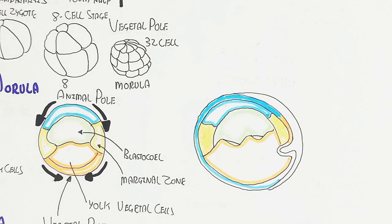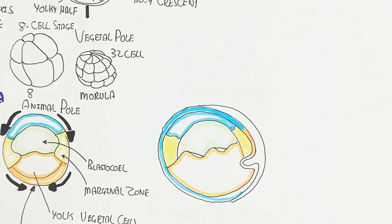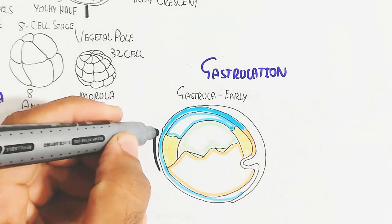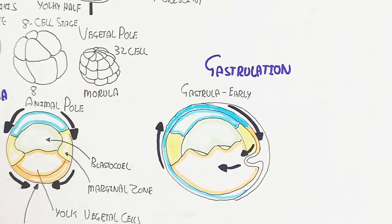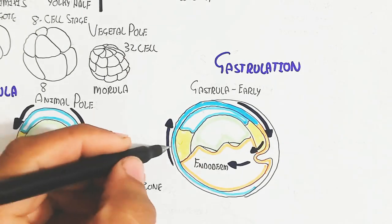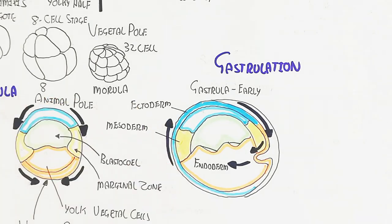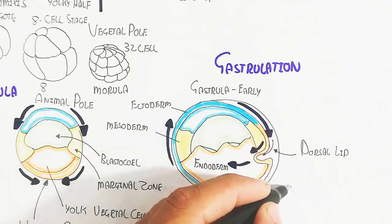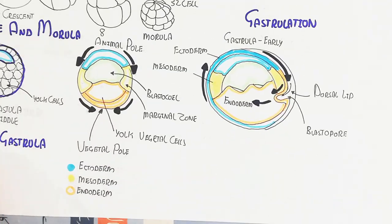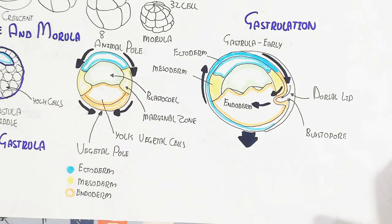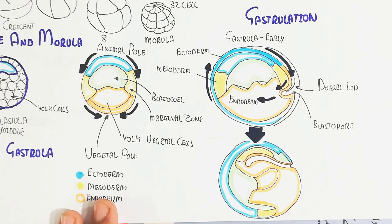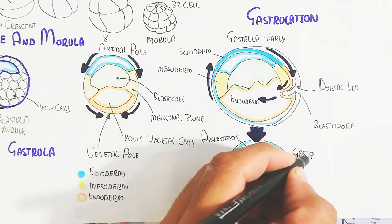The early stage of gastrulation occurs. In the late stage, the dorsal lip and blastopore will be formed. The blastopore means the ectoderm will invaginate as a bottle cell, and amoeboid movement will occur as the ectoderm moves inside, leading to endoderm formation. The endoderm is the orange color, the mesoderm is yellow, and the blastocoel cavity is green. The early gastrula leads to the late gastrula, where the archenteron forms due to bottle cell formation and invagination.